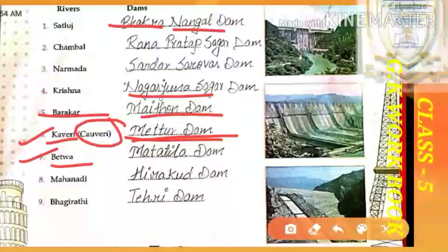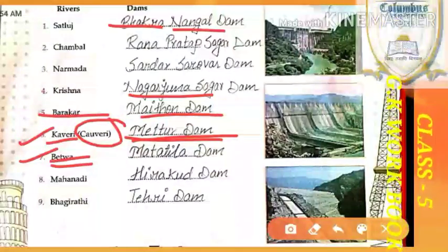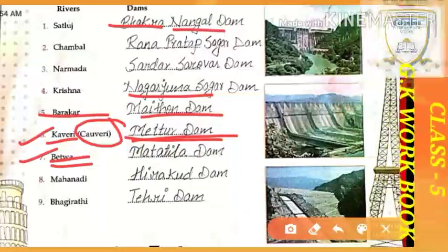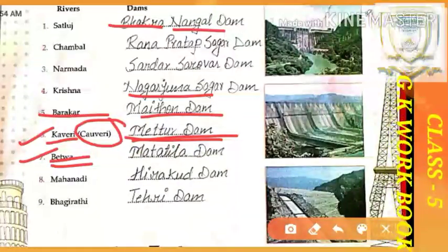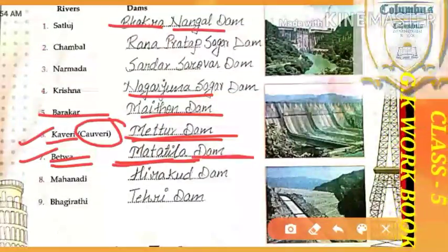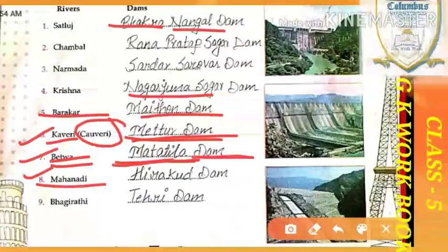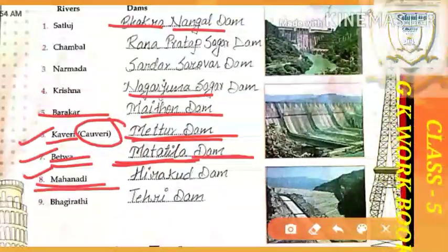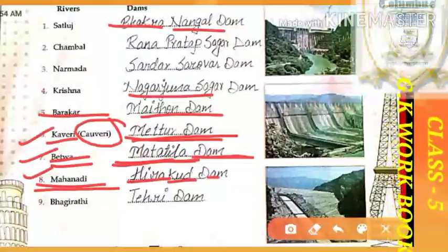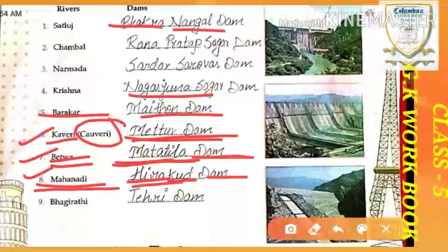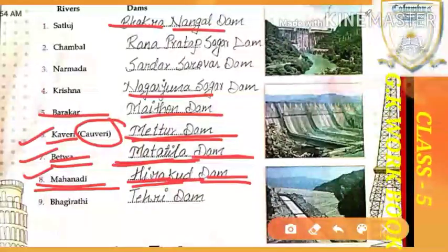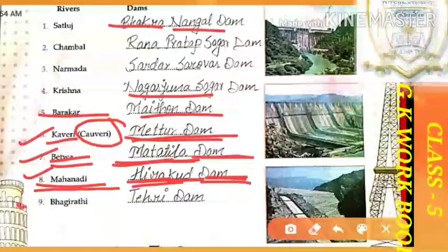Next one is Betwa river, and the dam built on this river is called Matatila Dam — M-A-T-T-L-A Dam. Next, Mahanadi river — Mahanadi river — and the dam's name is Hirakud Dam. Hirakud Dam. What is the dam's name? Hirakud Dam.